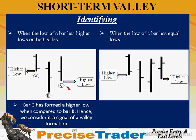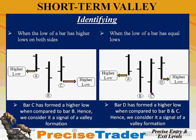When you see this first indication, get yourself prepared to go long because a short-term valley may be forming. The second condition is when the low of a bar has equal lows on both sides of the lowest low — meaning bars B and C are equal. When bar D forms a higher low compared to bars B and C, we consider this a signal for a valley formation.